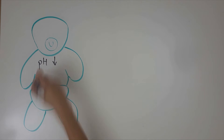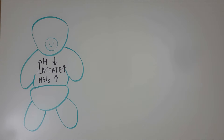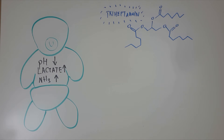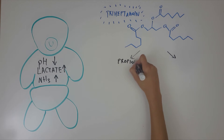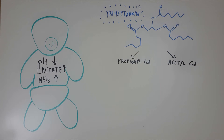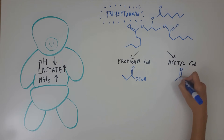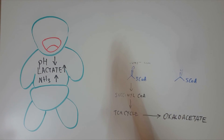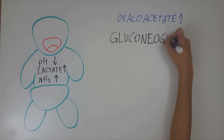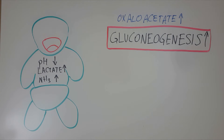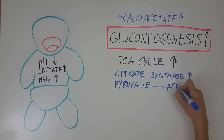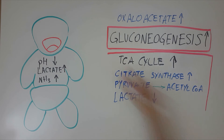A newborn patient presented with low blood pH levels, high lactate, and high plasma ammonia. To treat the patient, triheptanoin was initially prescribed as an anaplerotic therapy. Triheptanoin is an odd-carbon fatty acid that can be broken down via beta-oxidation to propionyl-CoA and acetyl-CoA. By administering triheptanoin to pyruvate carboxylase deficient patients, triheptanoin acts as a source of propionyl-CoA, which could be converted to succinyl-CoA, and subsequently oxaloacetate through the TCA cycle. With the restoration of oxaloacetate, gluconeogenesis function is enhanced, and increased oxaloacetate improves citrate synthase function, thereby increasing pyruvate conversion to acetyl-CoA and reducing pyruvate conversion to lactate.